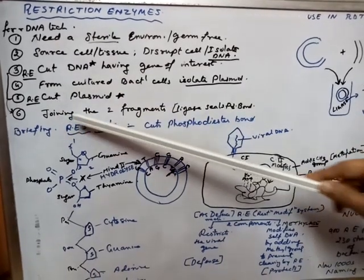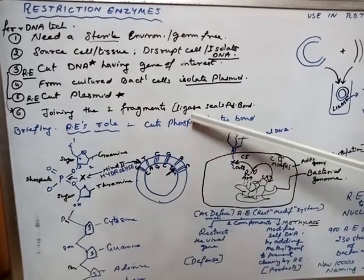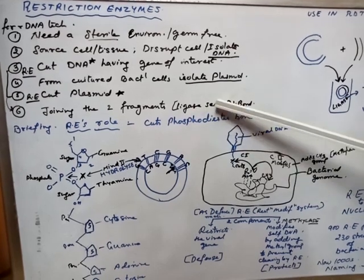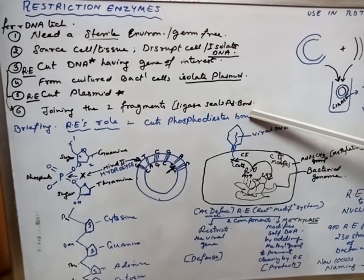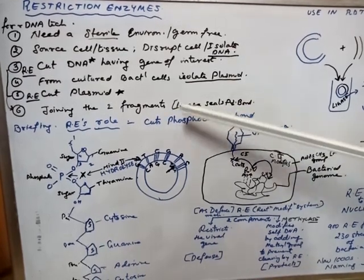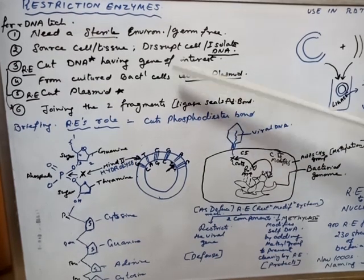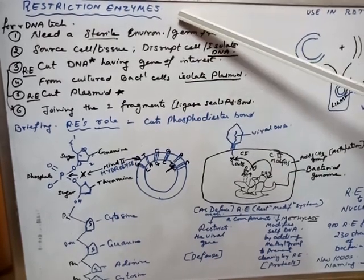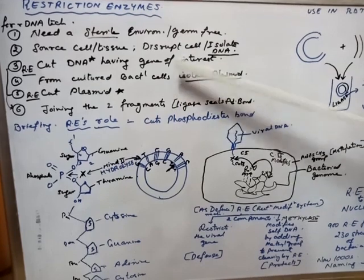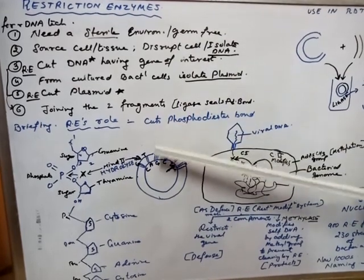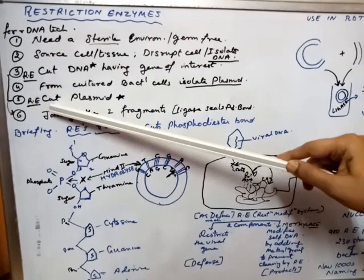Other than that, when we cut, we need to join those two fragments. For that, another enzyme is called ligase which seals the phosphodiester bond. Before I tell you how exactly this restriction enzyme was found, where was it found, let me just brief you a little on where does it exactly cut.